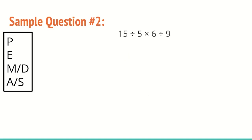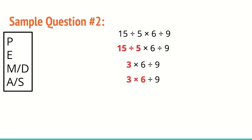Sample question two: 15 divided by 5 times 6 divided by 9. No parentheses, no exponents, but we do have multiplication or division — whichever comes first, left to right. 15 divided by 5 comes first, giving us 3. Then 3 times 6 is next, which is 18. Final step: 18 divided by 9 is 2. Our final answer is 2.